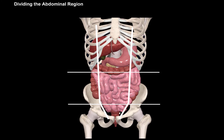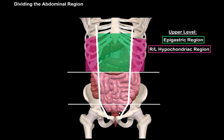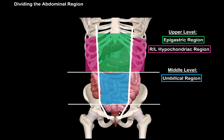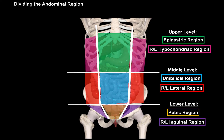So now we have nine distinct regions. At the upper level, we get the epigastric region and the right and left hypochondriac regions on either side beneath the ribs. In the middle level, we get the umbilical region in the middle, since the umbilicus or navel is here in the middle, and then laterally we have the right and left lateral regions. At the lower level, we have the pubic region and the right and left inguinal region, sometimes also referred to as the right and left iliac region.